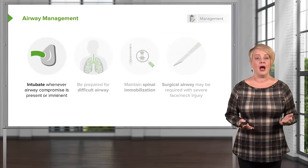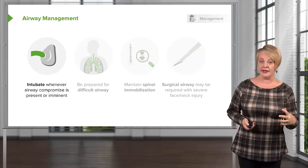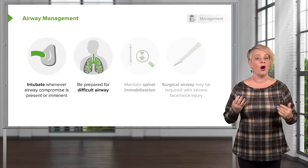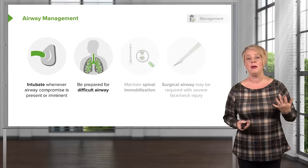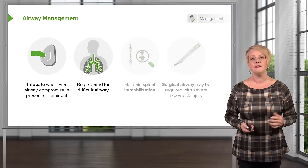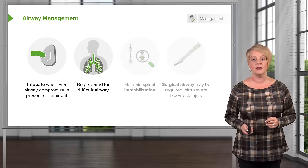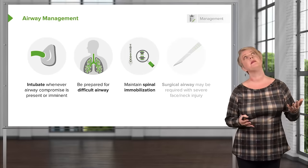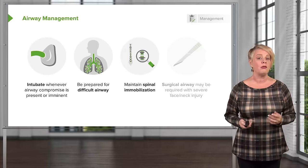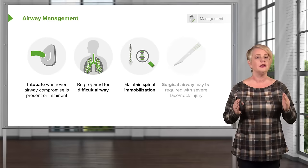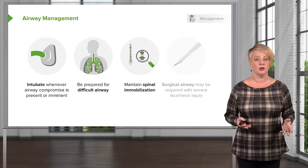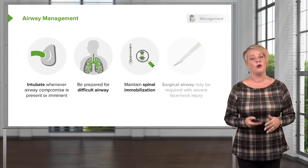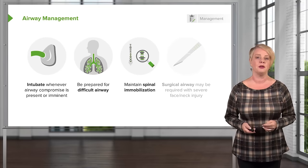Whenever you identify airway compromise — either currently or imminently developing — you want to go ahead and intubate your patient. However, in trauma there's often distortion of normal anatomy. If the patient has swelling, bleeding, or facial fractures, the airway might be very technically challenging. We also have to maintain spinal immobilization — we can't just crank the patient's neck in any direction. You need to be really proficient with airway management for a trauma airway, and if this isn't something you have a lot of experience with, get backup from an anesthesiologist.